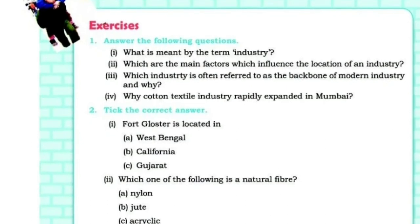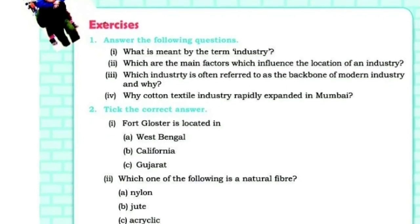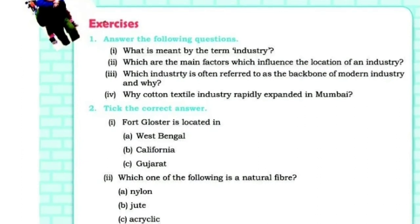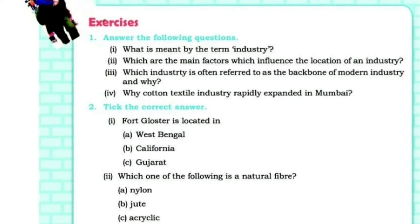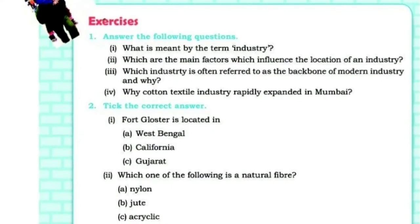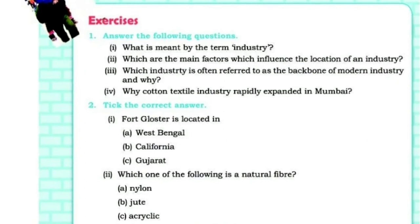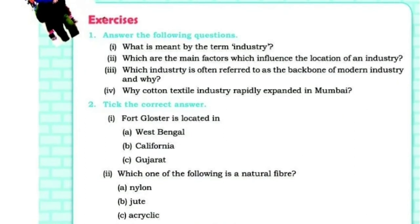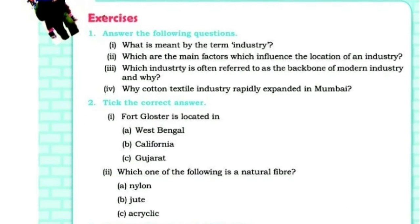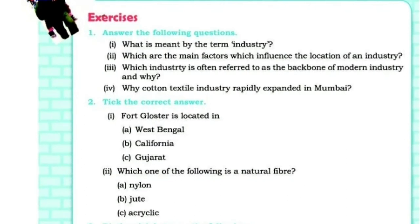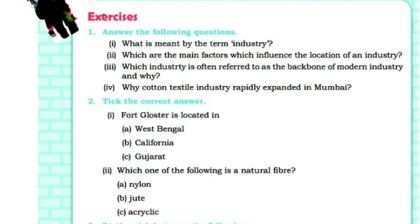What are the main factors which influence the location of an industry? The availability of raw material, availability of land, adequate supply of water, adequate supply of labor, access to power, amount of capital, access to transport, and presence of market.